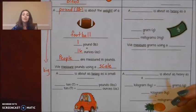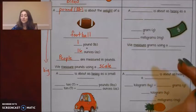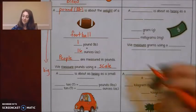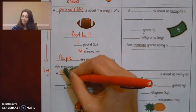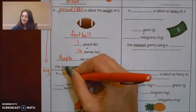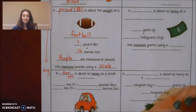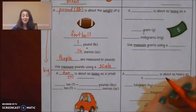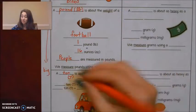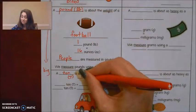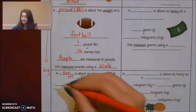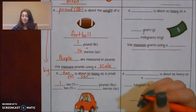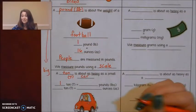Okay, the last one, the really big weight unit for customary is a ton. And the abbreviation for ton is T, a capital T. A ton is about as heavy as a small car. All right, one ton equals 2,000 pounds.